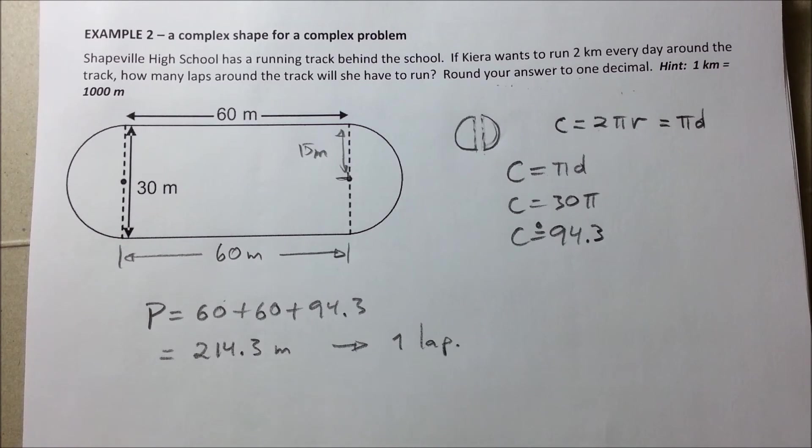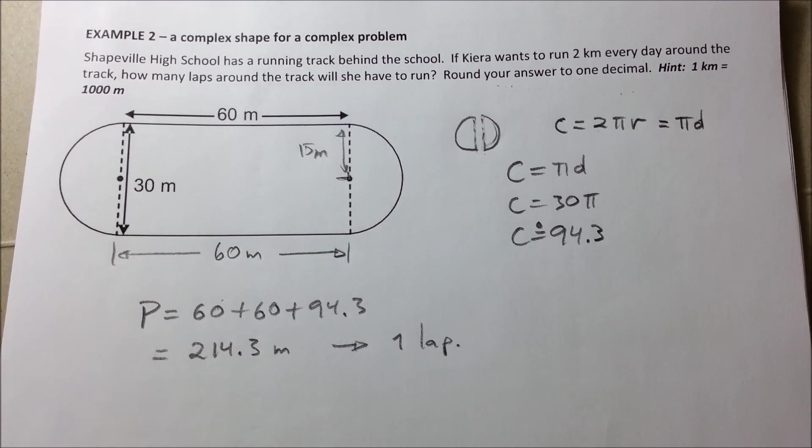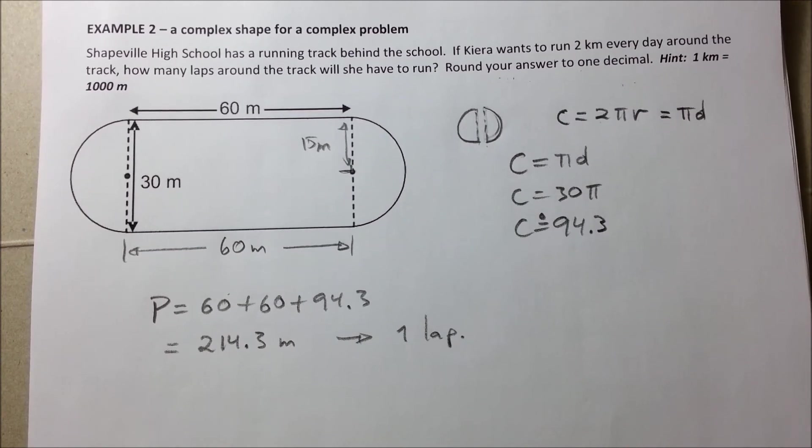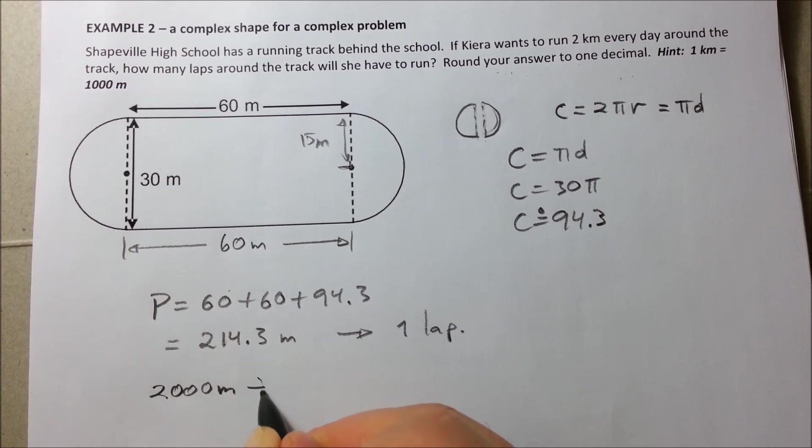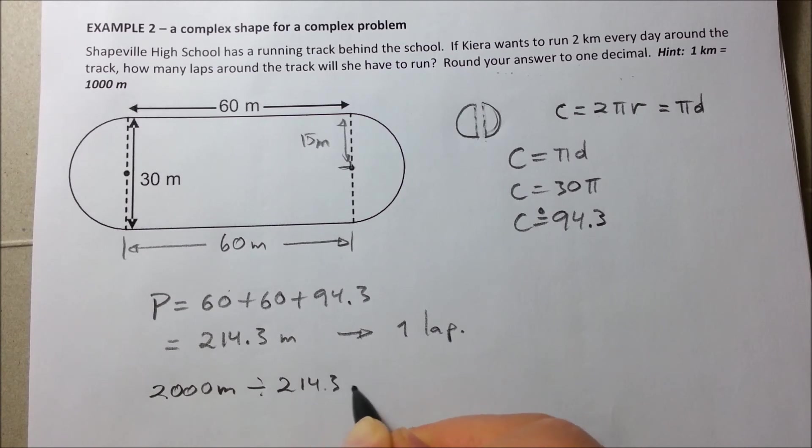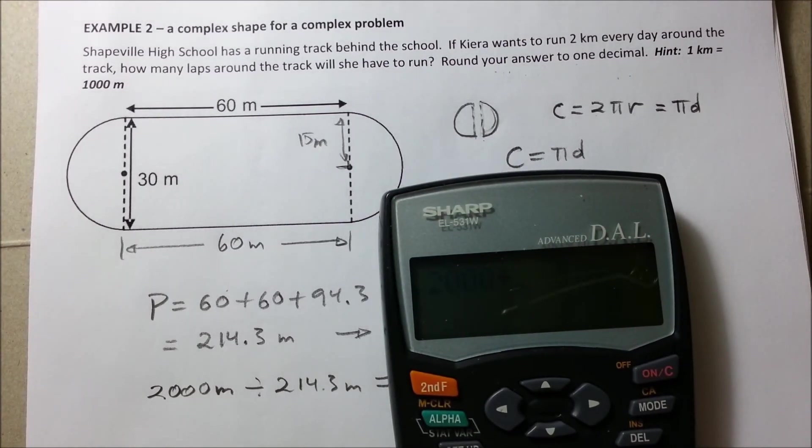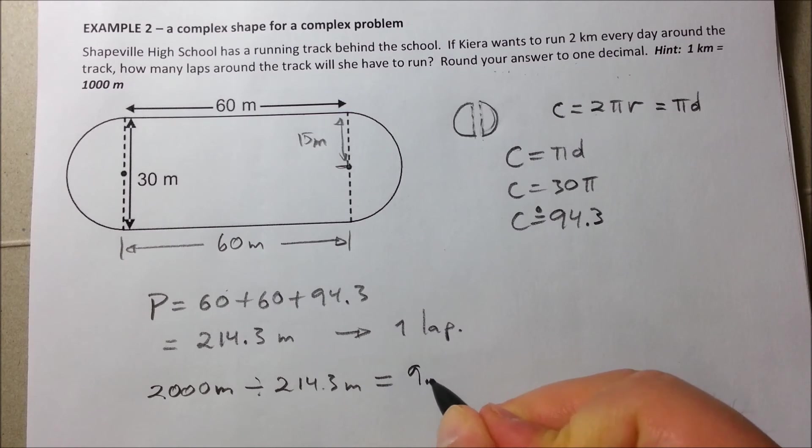Now, how do we find out the number of laps that she needs to run around the running track in order to complete 2,000 meters or 2 kilometers? Well, what we need to do is to divide 2,000 meters divided by 214.3 meters, which is 1 lap. What is that equal to? Well, you put it in your calculator and we're getting 9.33.